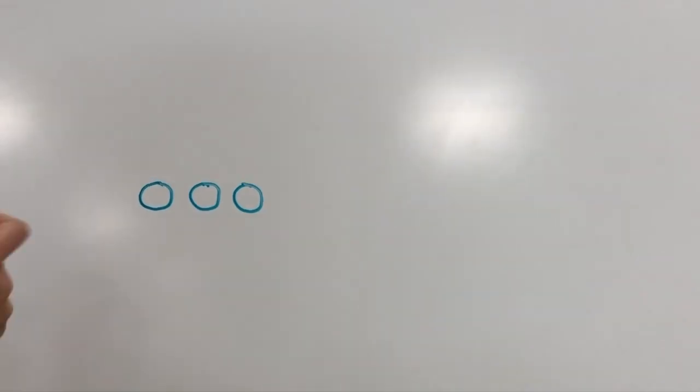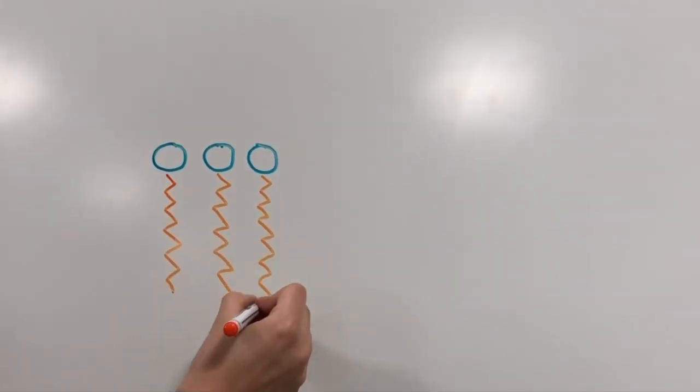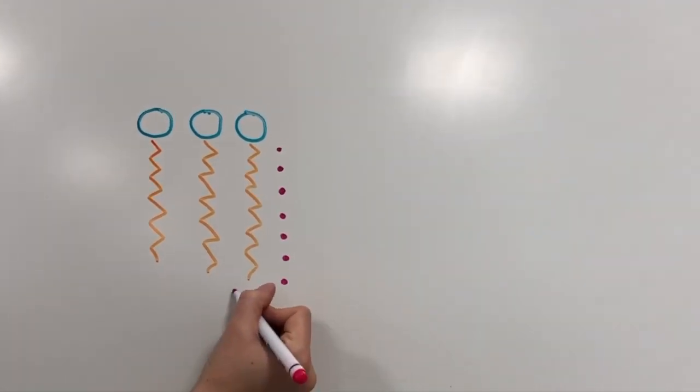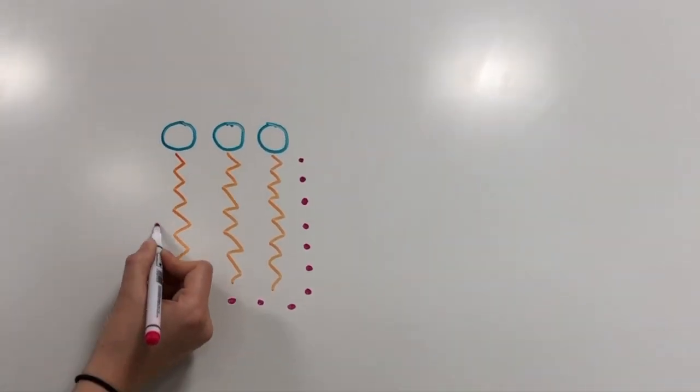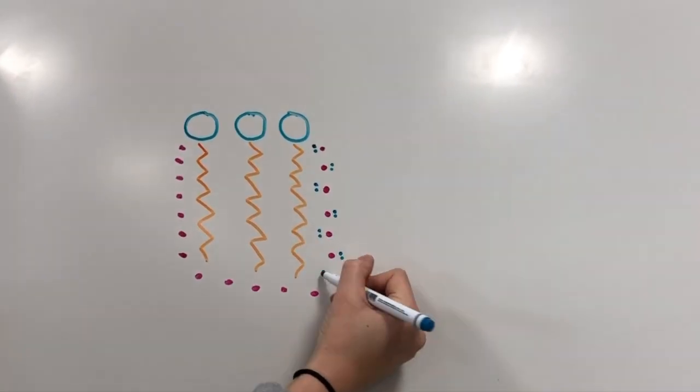If two or more non-polar molecules are added into water, the non-polar molecules will cluster together. This is energetically favorable because it releases the trapped water molecules and allows them to once more form hydrogen bonds with other water molecules.